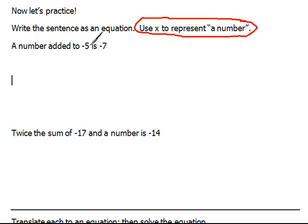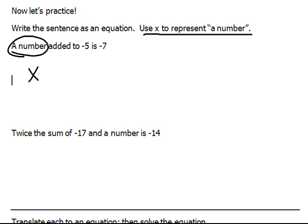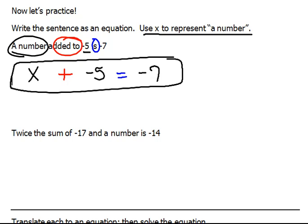Now, let's look at our first problem. It says a number added to negative 5 is negative 7. These are just translation problems like you've done before. It does not say solve anything, just write it as an equation. So, a number would be x, added to—that's a key word for addition—and then we have negative 5. Is is a key word for equals, and then we have negative 7. We have written the sentence as an equation. We're done.